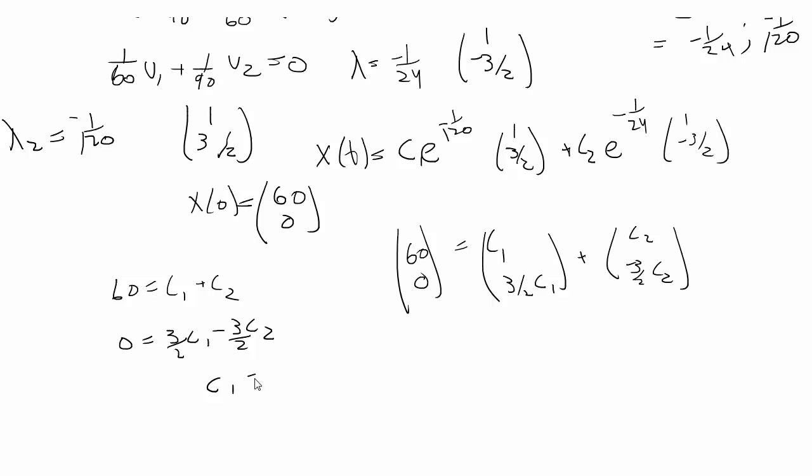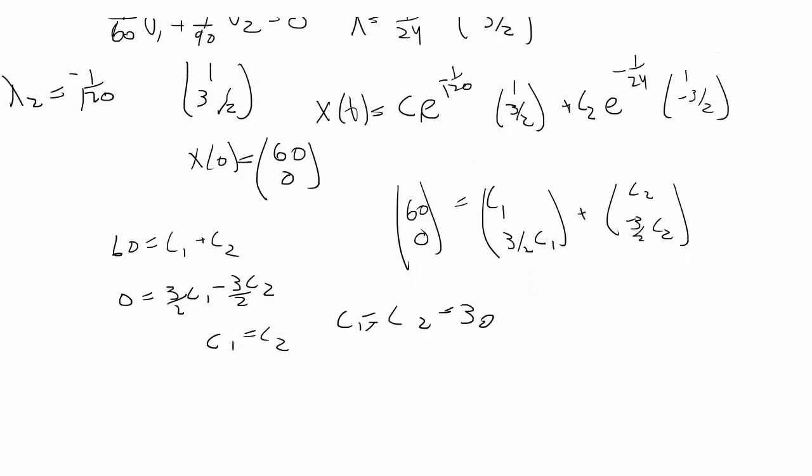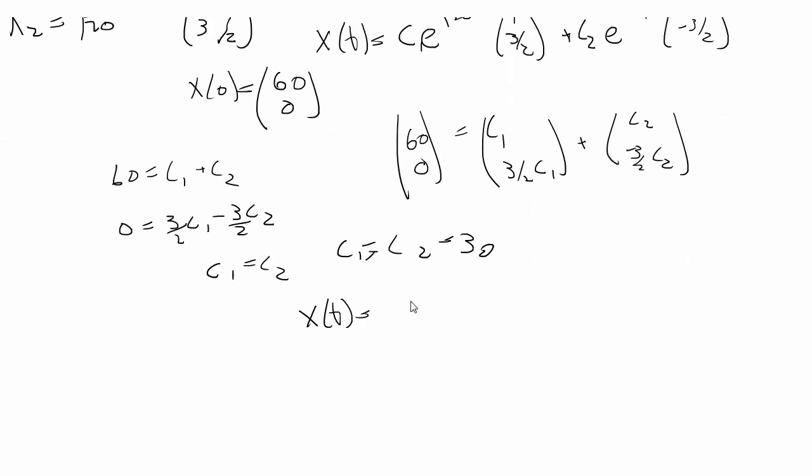and 0 is equal to 3 halves c1 minus 3 halves c2. So again, we have that c1 is equal to c2. So that means c1 is equal to c2 is equal to 30.